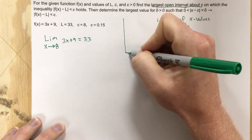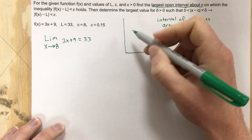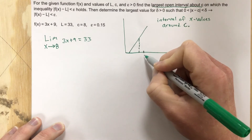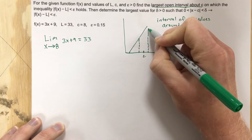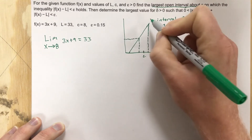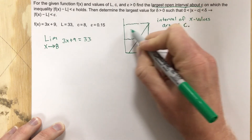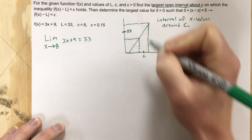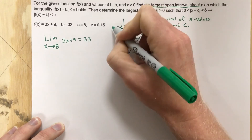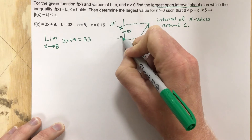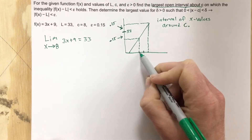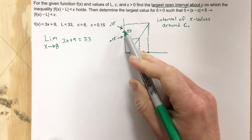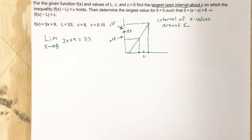If you think about our function, I'm just going to draw a straight line. We have this point c, and then we've got these x values that are going to produce some y values. This is our limit, which is 33. These are the epsilons — 0.15 above and 0.15 below. So what they're looking for is the interval surrounding c that will produce these gaps of 0.15.